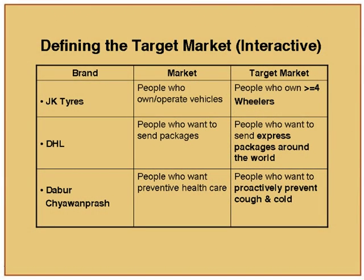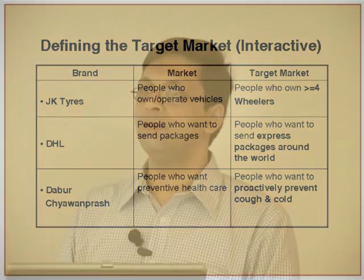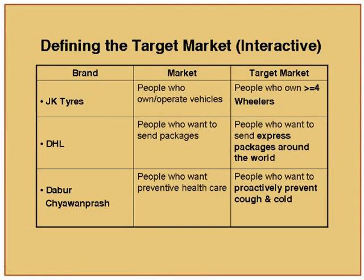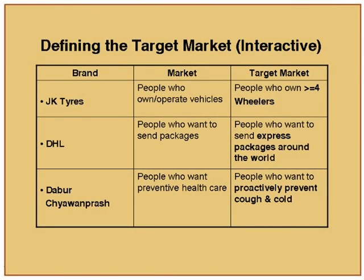Let us take examples from large organized industries to make our thinking clearer. JK Tires — what is the market? People who own and operate vehicles. Their target market is vehicles with four or more wheels — they do not manufacture two-wheeler tires; they are very clear. DHL — the market is people who want to send packages, but in this market comes postcards as well. Their specific focus is: people who want to send express packages around the world. This is one focused chunk of the total market.